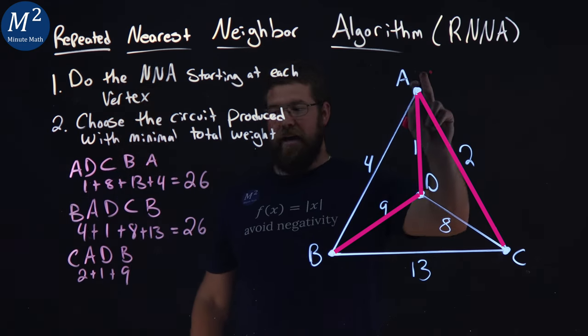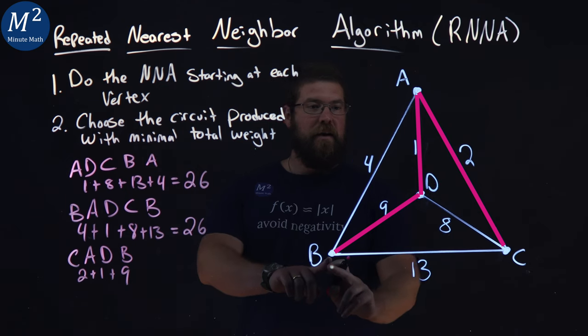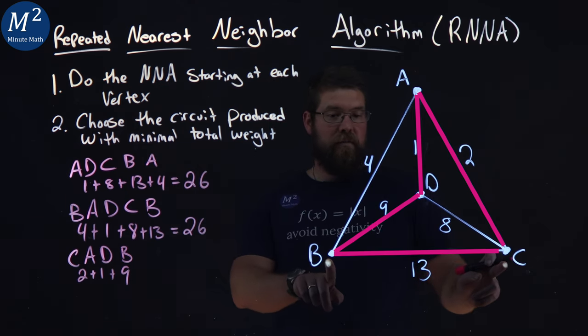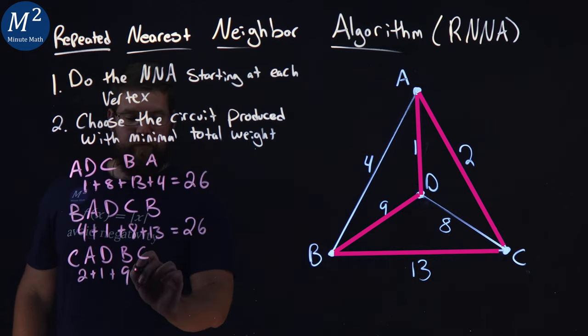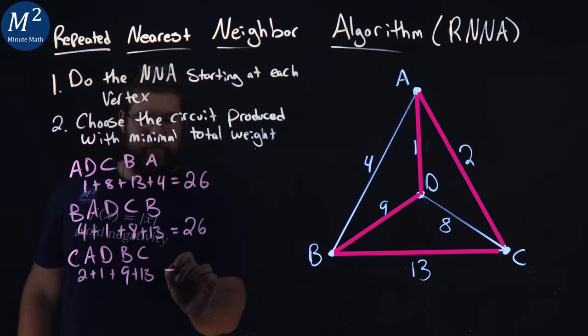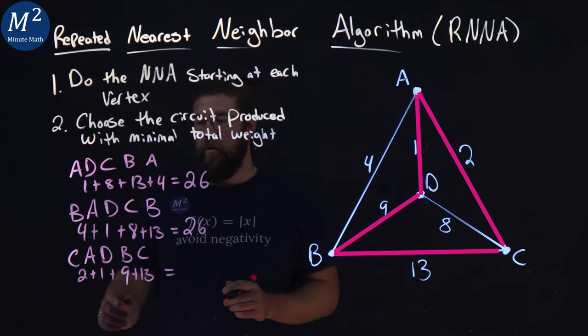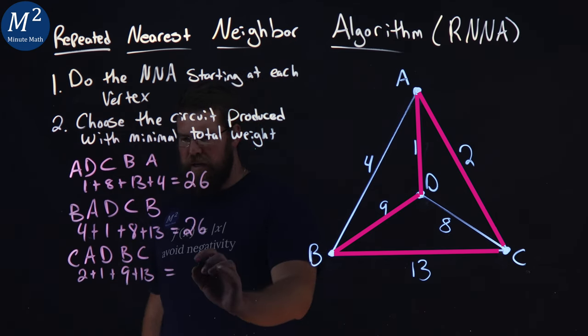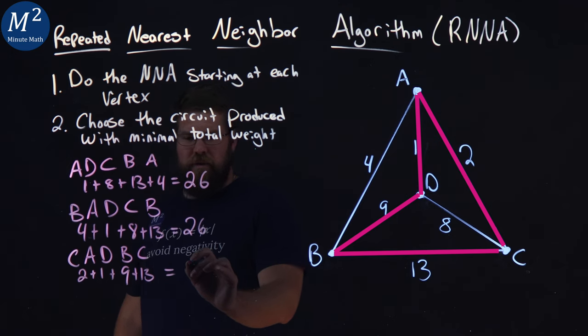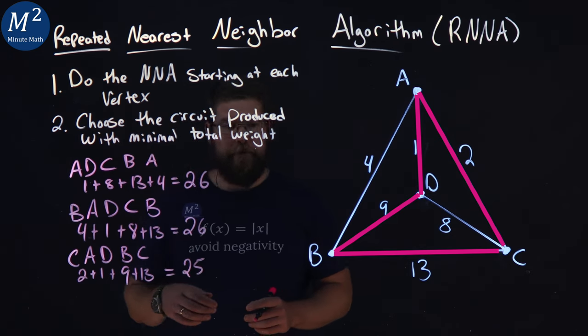So we went C, A, D, B. We then had to go back to C to complete the circuit, because everything else we've been to. And that's a 13. And so the total weight here, 2 plus 1 plus 9 plus 13, that's going to be 25. All right, so we have a total weight of 25 here.